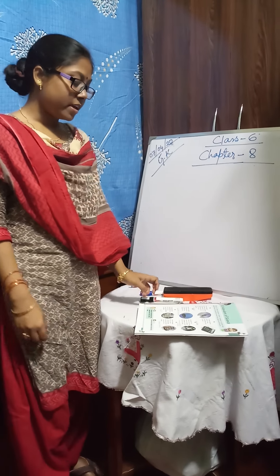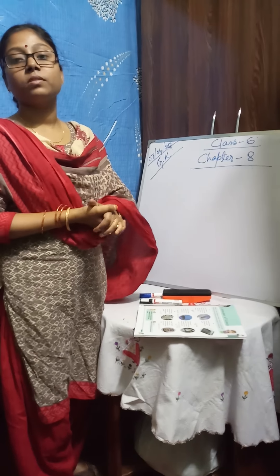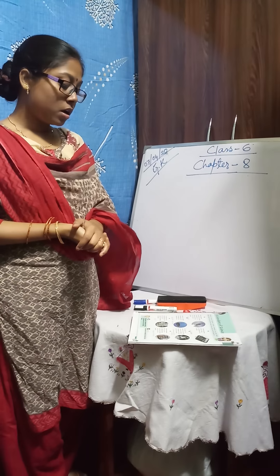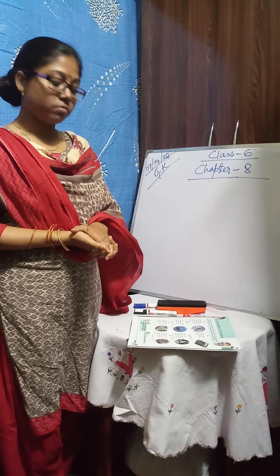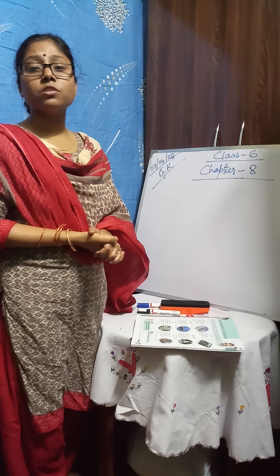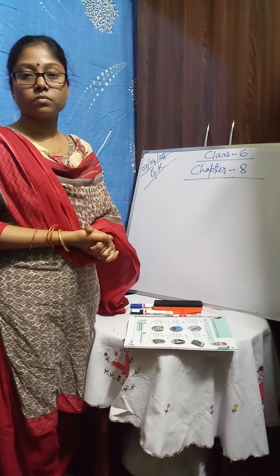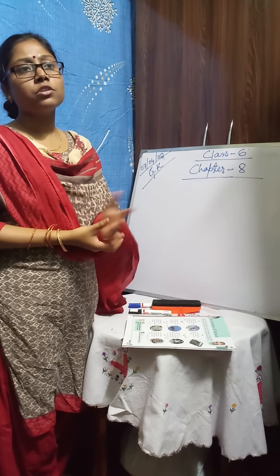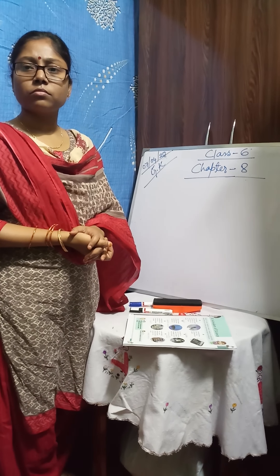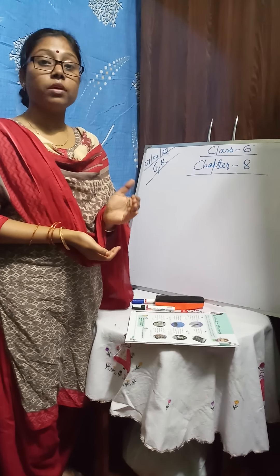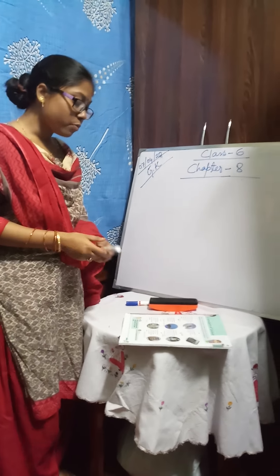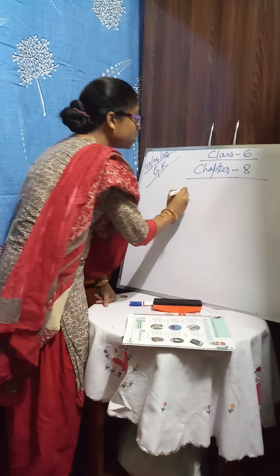Good evening students. We have discussed a lot — total seven chapters we have discussed. Today's chapter is related with science: Wonders of Science, the modern inventions. Some examples are given here and it will definitely come as a short note. You have to write about modernized technology, or it can come as a question like what do you know about a rocket. The paragraph given in your book is enough to answer. So let us see — the name of the chapter is Wonders of Science.